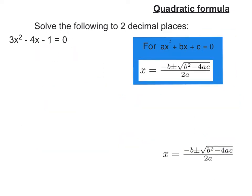All right, let's look at this second example. First, I'm going to find out what my a, b, and c are. So a is the coefficient of x squared, so that's 3. b is the coefficient of x, which is negative 4. And c is the constant term, which is negative 1.